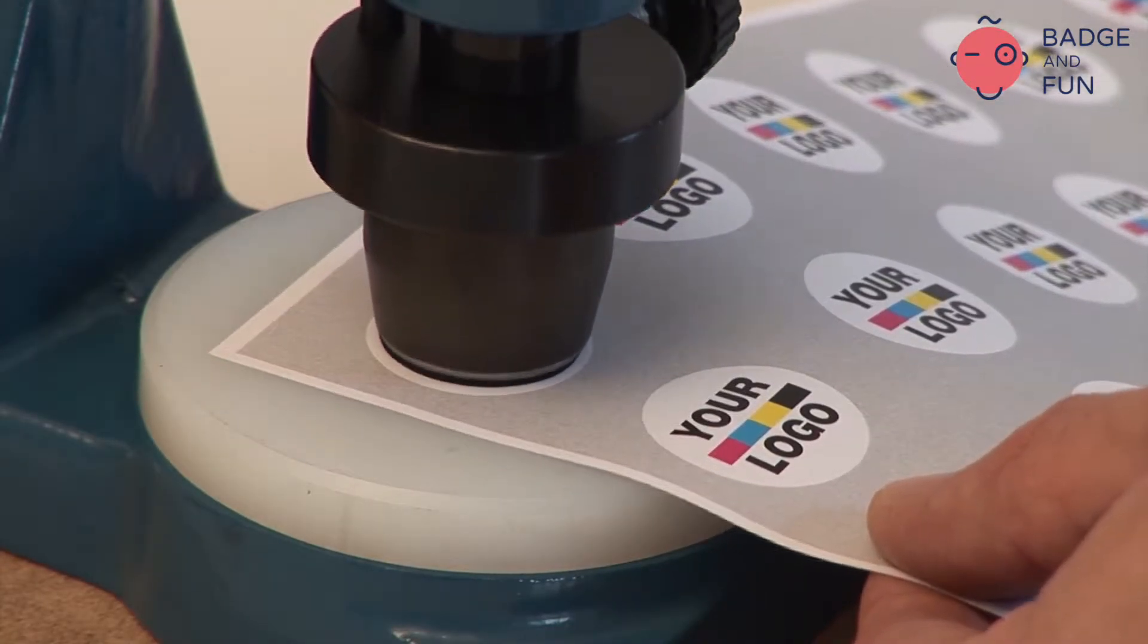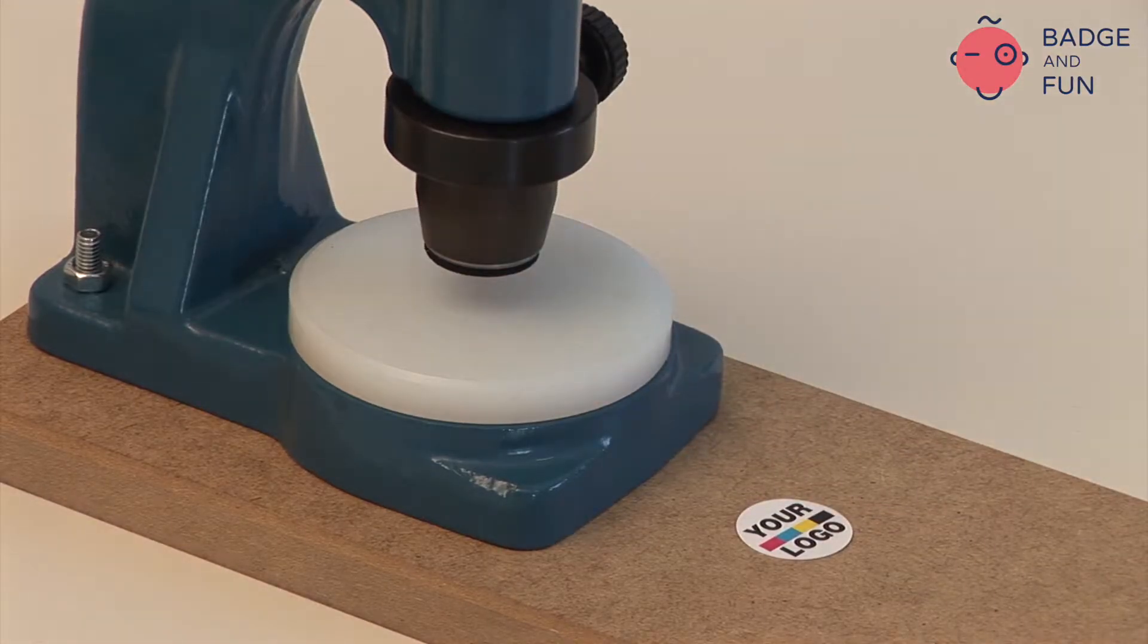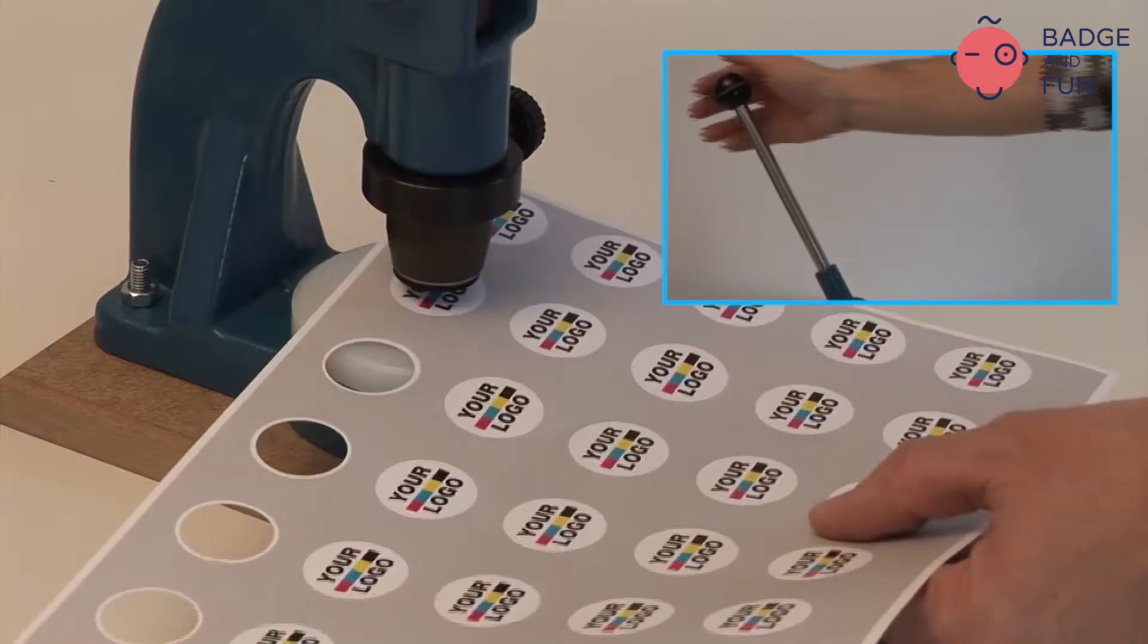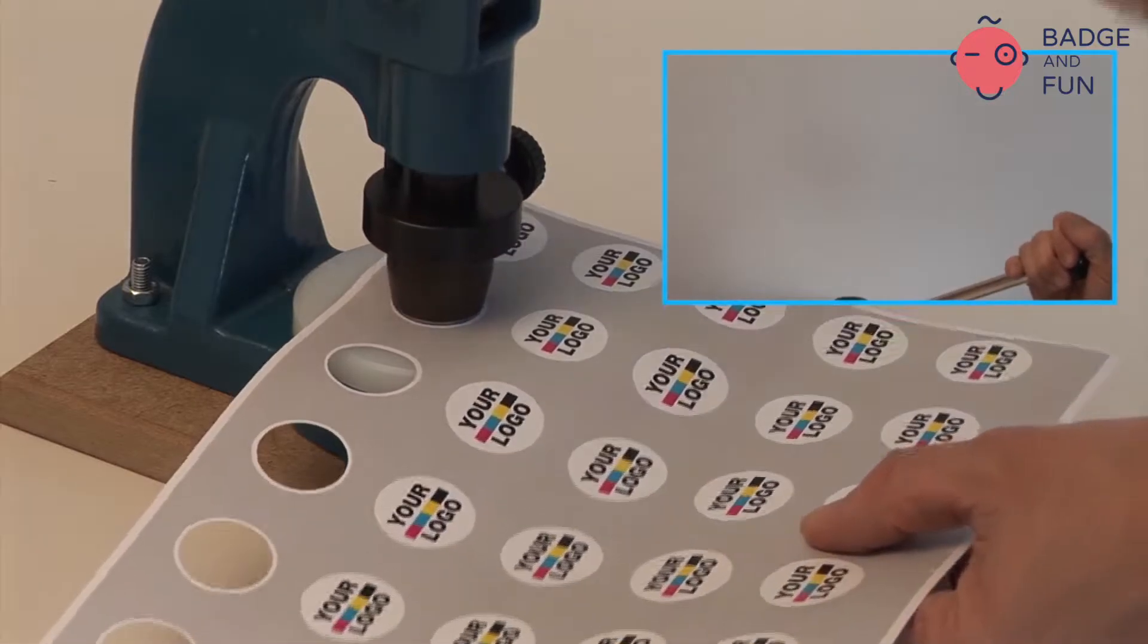Place one or several papers beneath the die cut and over the nylon. Pull the handle to proceed with cutting.